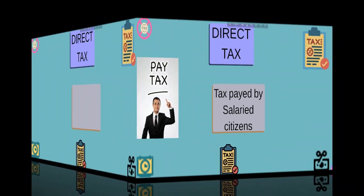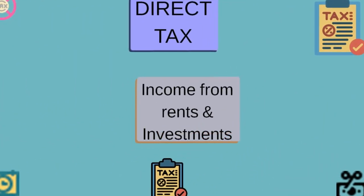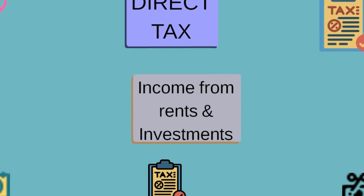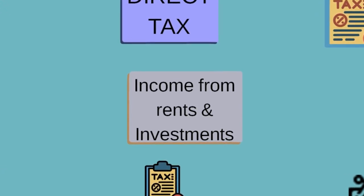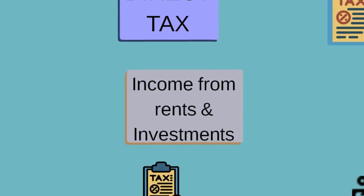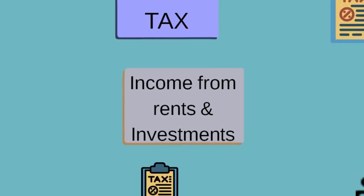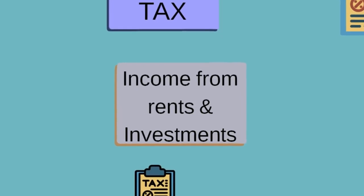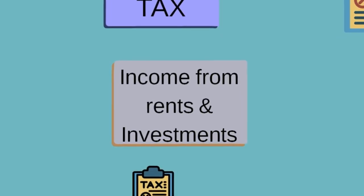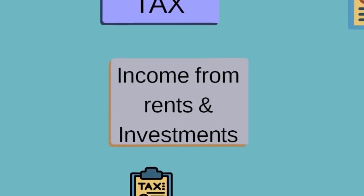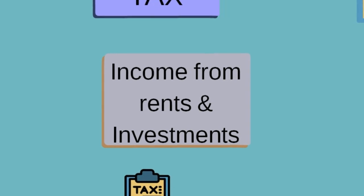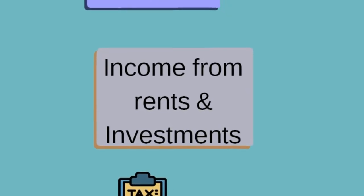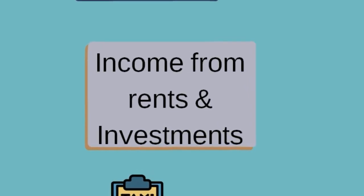Earnings are not only from salaries but also include income from other sources such as rent on properties, annual interest earned on savings, consultancy jobs, and part-time jobs. All earnings have to be added together to arrive at the total monthly and annual earnings in a year.